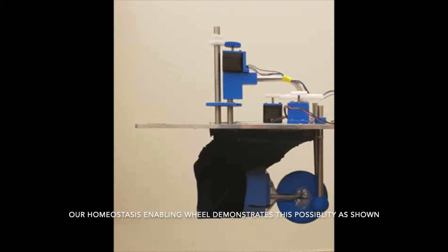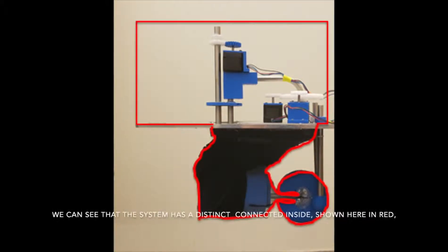Our homeostasis enabling wheel demonstrates this possibility as shown. The entire setup holds on an aluminum plate. The aluminum plate can be seen as the underbody of any system that would use wheeled locomotion. When the vehicle is complete, we can see that the system has a distinct connected inside, shown here in red, and a distinct outside, which includes all of its outside environment.